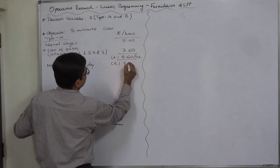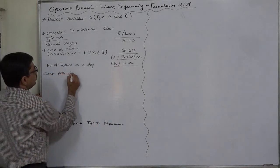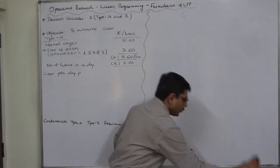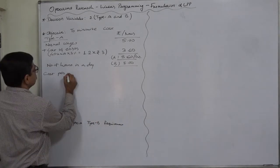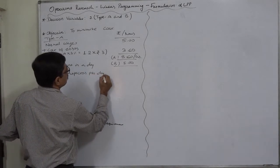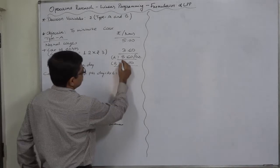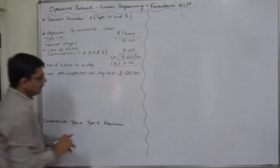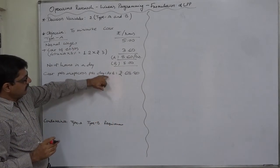Number of hours in a day is 8, so cost per Type A inspector per day = 8 × 8.60 = rupees 64 plus 4.80 = rupees 68.80 per day. For x1 inspectors, total Type A cost = 68.80 × x1.